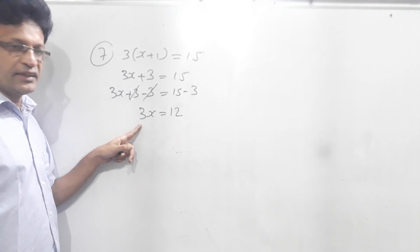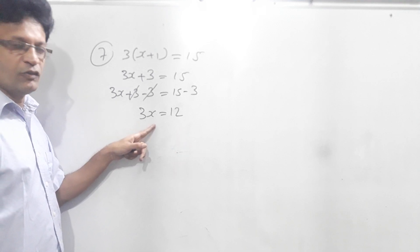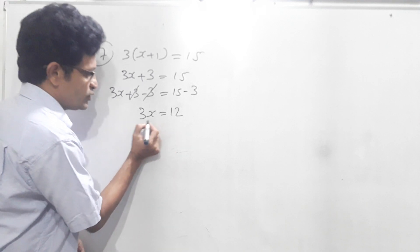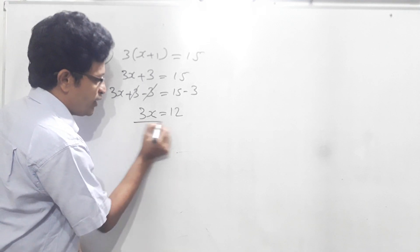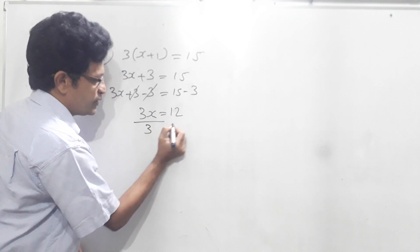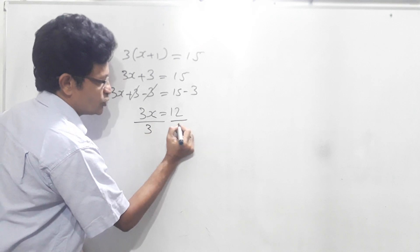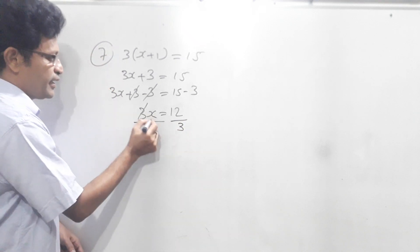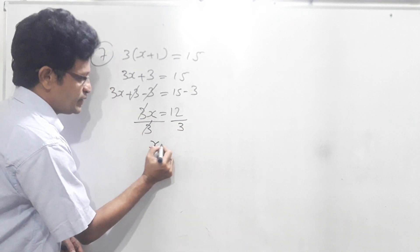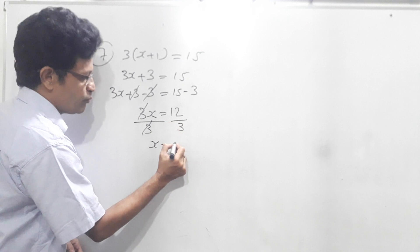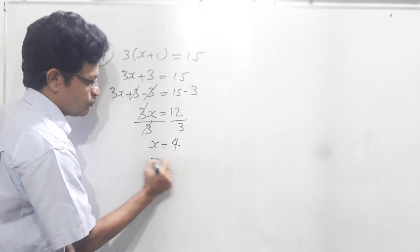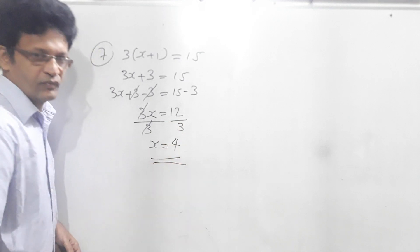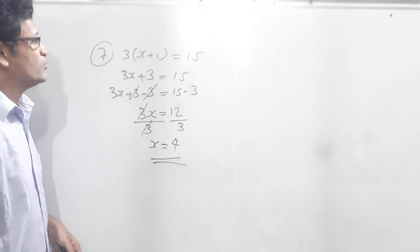Now 3x equals 12. So we have to get rid of this 3 to find the value of x. Therefore we have to divide this side by 3, then this side also we have to divide by 3. 3 and 3 cancel. x is equal to 12 divided by 3, which is 4. Okay, right.